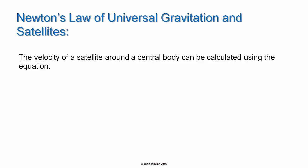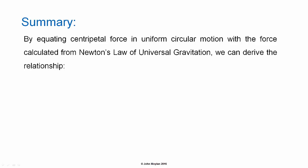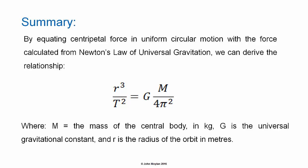The velocity of a satellite around a central body can be calculated using the equation v squared equals capital G capital M on R. Summary: by equating centripetal force in uniform circular motion with the force calculated from Newton's law of universal gravitation, we can derive the relationship r cubed on t squared equals capital G capital M on 4 pi squared, where capital M is the mass of the central body in kilograms, capital G is the universal gravitational constant, r is the radius of the circle in meters, and t is the orbital period in seconds.